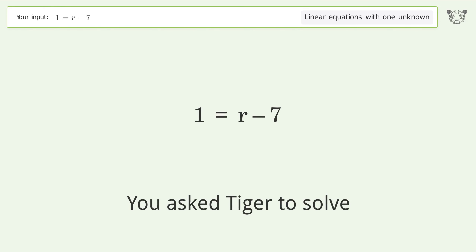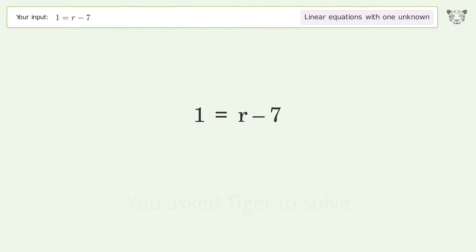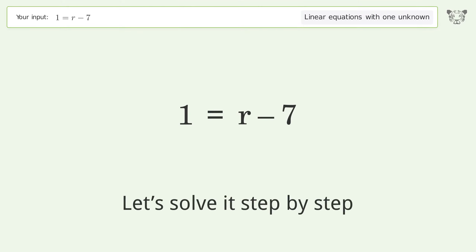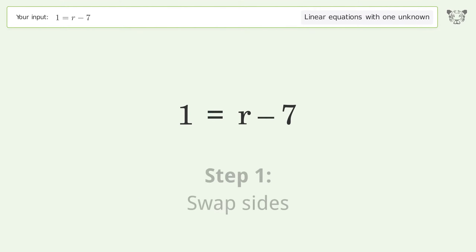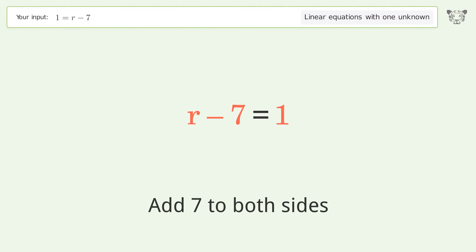We ask Tiger to solve this — it deals with linear equations with one unknown. The final result is r equals 8. Let's solve it step by step: swap sides, group all constants on the right side of the equation, add 7 to both sides.